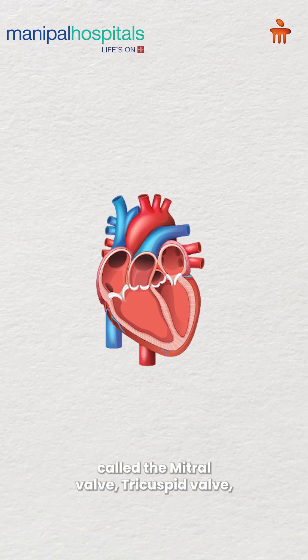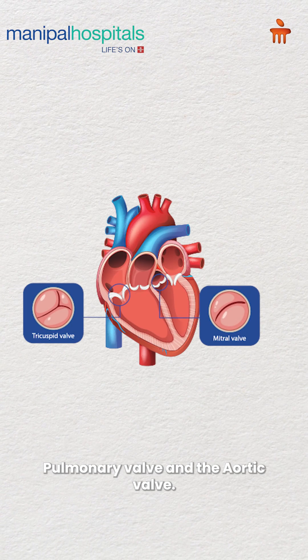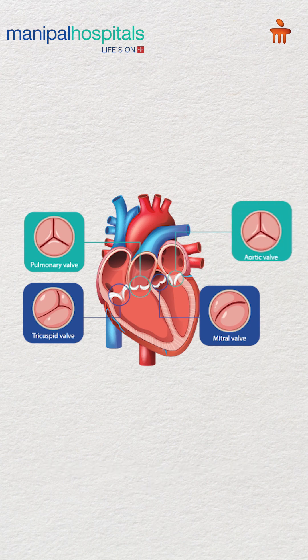It has four valves called the mitral valve, tricuspid valve, pulmonary valve, and the aortic valve.